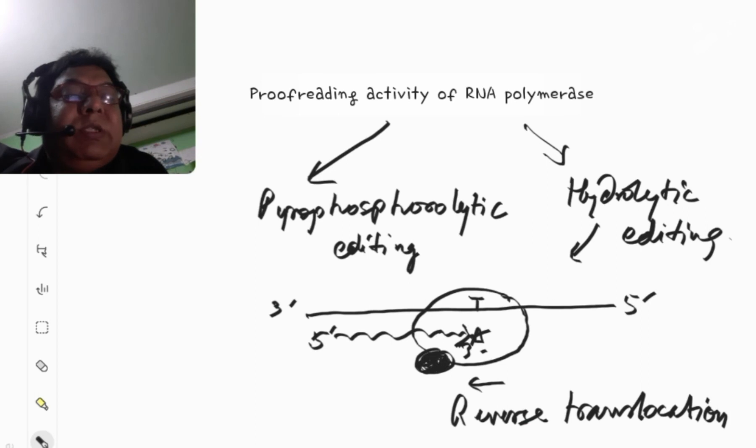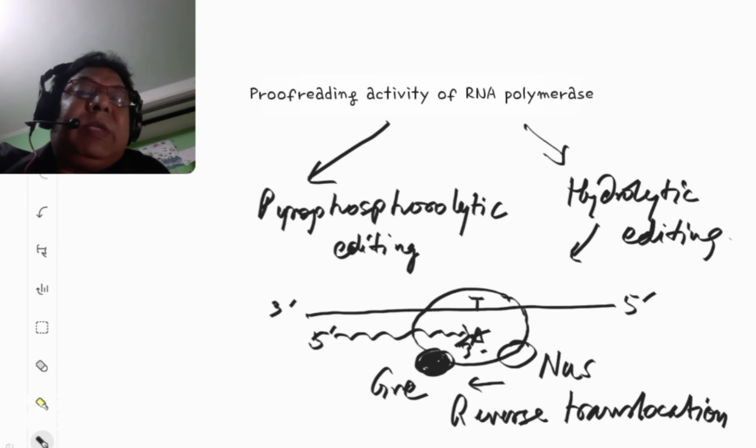One is called the GRE, the elongation factor GRE. Another one is this NUS, N-utilization substance. These are two elongation factors, they also get associated to this. And whether they bring the hydrolytic cleavage or the RNA polymerase itself, it remains to be known.